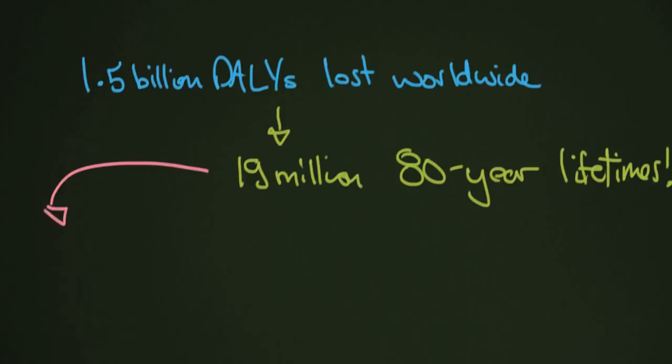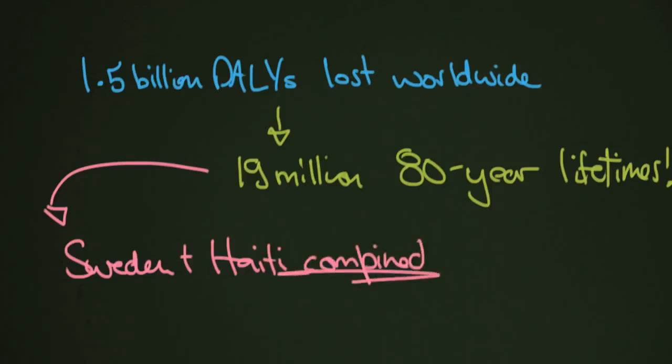That is just a lot. And if you kind of take a look at some populations of a few countries and you add them up, that is actually the population of Sweden and Haiti combined. So if you were just to take those people and just wipe them off the earth, that would be, and actually if they were to live 80-year lifetimes, which people in Haiti and Sweden don't do yet, if you were to take those 80-year lifetimes and wipe them out, that is the loss of life that's happening around the world every year.